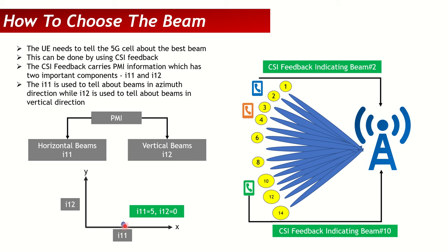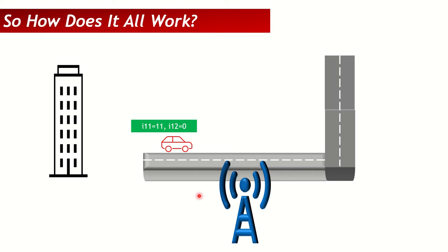If that UE then enters a building and takes an elevator to the top floor, i11 stays the same since the horizontal position hasn't changed, but i12 changes — for example, i12=6. The gNodeB then generates a new beam at a different elevation angle to serve the UE at its new vertical position. So the PMI feedback tells the gNodeB both where horizontally and where vertically to transmit the beam.